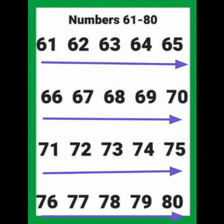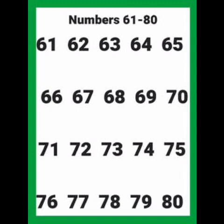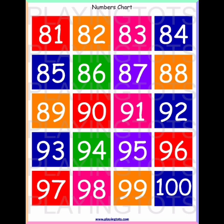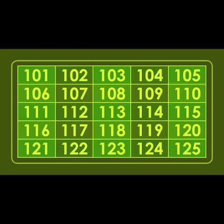Now start reading the numbers from 61 to 80: 61, 62, 63, 64, 65, 66, 67, 68, 69, 70, 71, 72, 73, 74, 75, 76, 77, 78, 79, and 80. Now, children, can you find out the missing number from 81 to 100? Read the numbers one after another and find out the missing number. After writing, check the answers.